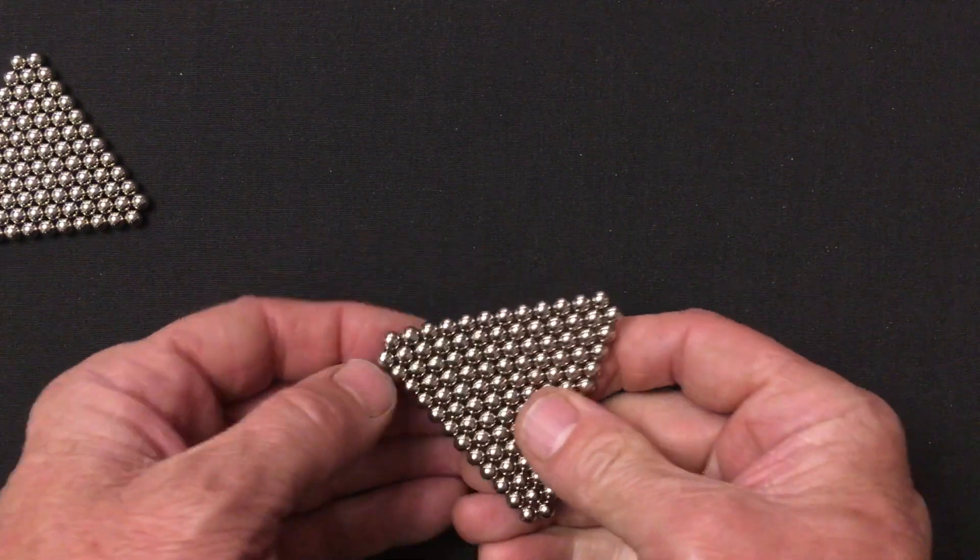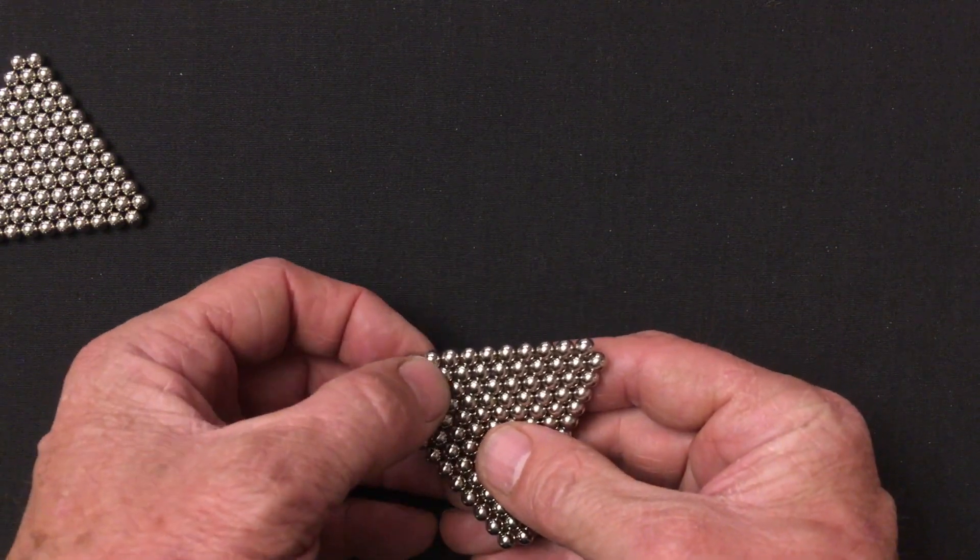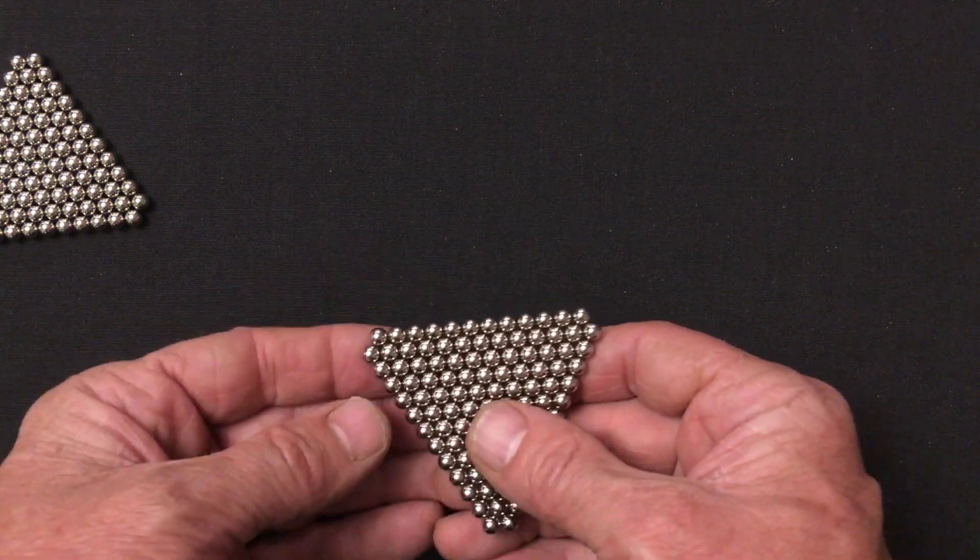Let's see how close we are. 2 by 1, 2, 3, 4, 5, 6, 7, 8, 9, 10, 11, 12. Perfect.